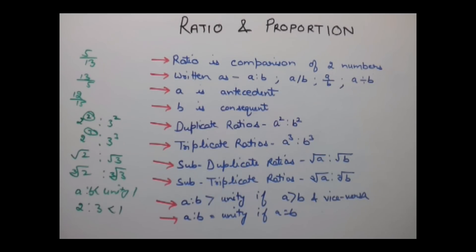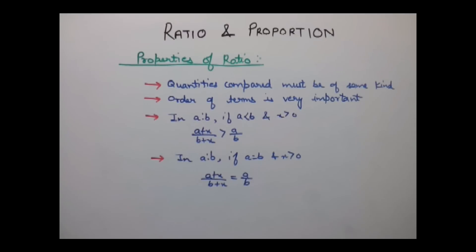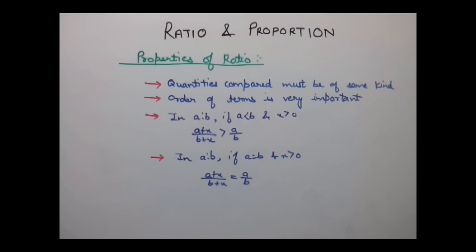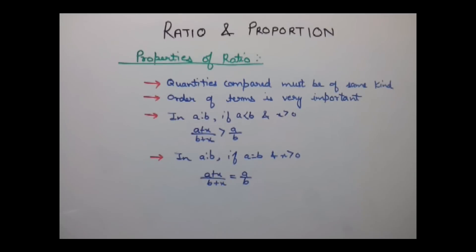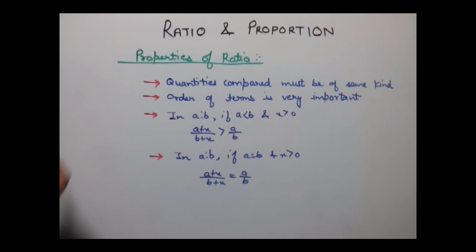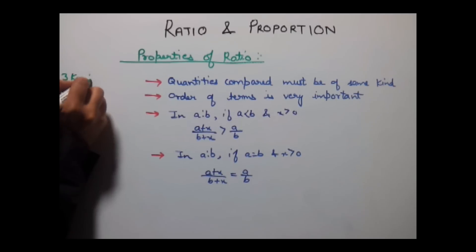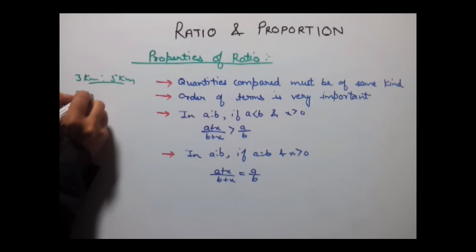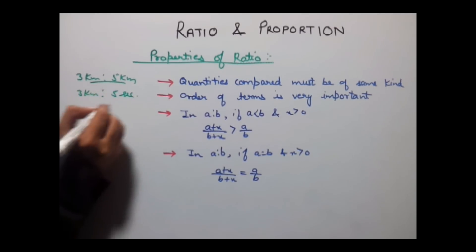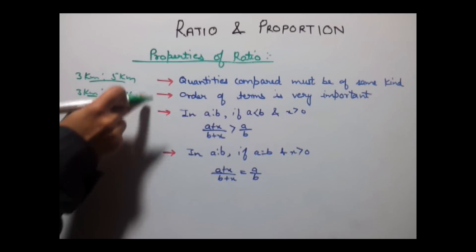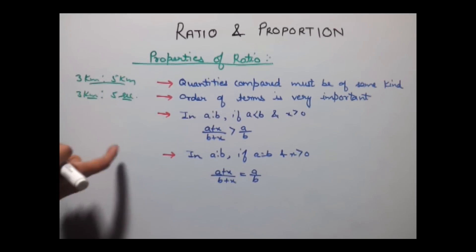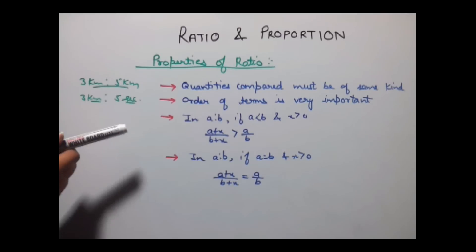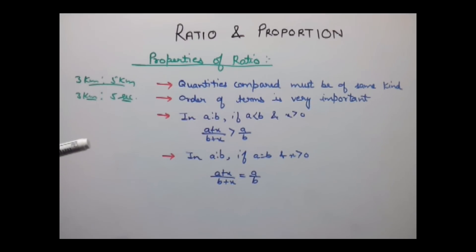Now let's see some properties of a ratio. The first property is that quantities compared must be of the same kind. We can compare 3 km with 5 km — that is a valid ratio. But if we compare 3 km with 5 seconds, the units are not the same, so that is not a proper ratio.